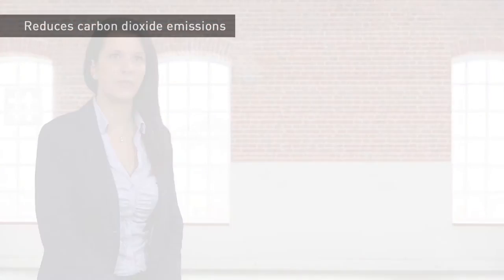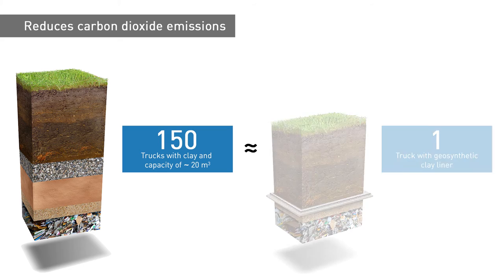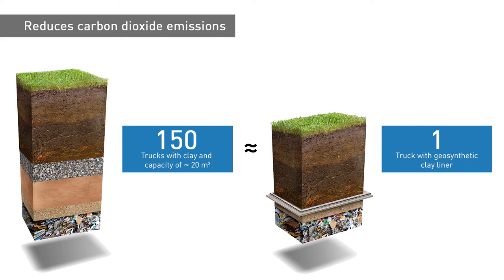In fact, for example, considering solely the transport within the construction site, 150 trucks of clay having the capacity of about 20 meters cubed each are equivalent to a single lorry with trailer containing a bentonite geocomposite.